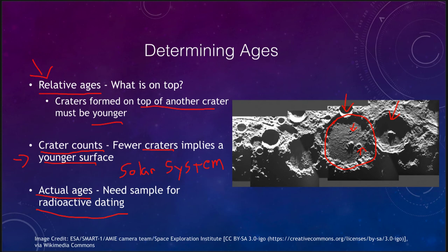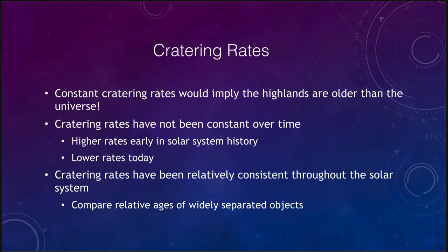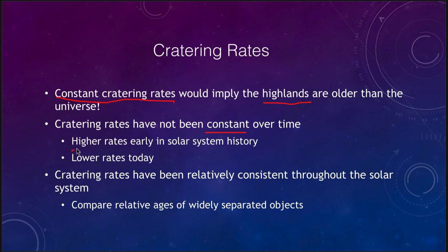Let's look at what the cratering rates have been. First of all, cratering rates have not been constant across the history of the solar system. If you use those crater counts and other measurements, we would find that the highlands of the moon are older than the entire universe, which obviously would not be possible. So it tells us that cratering rates were higher early in the history of the solar system and lower today.